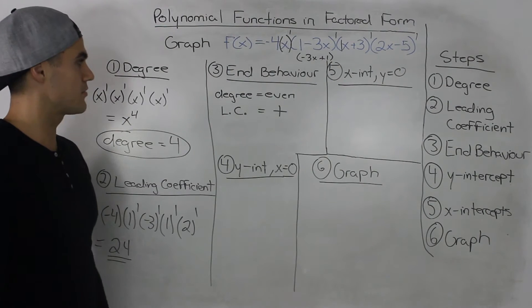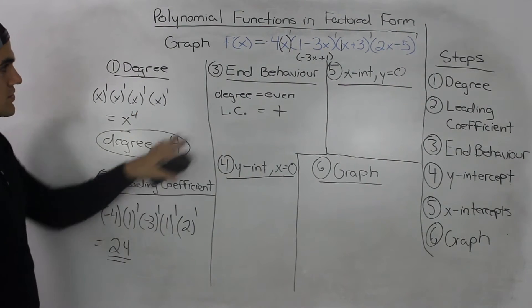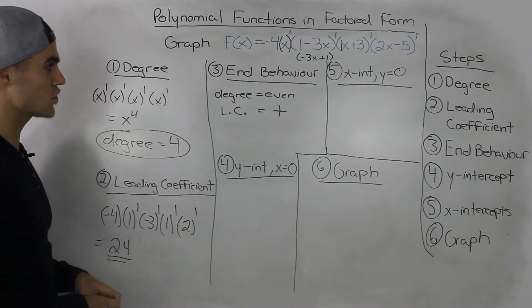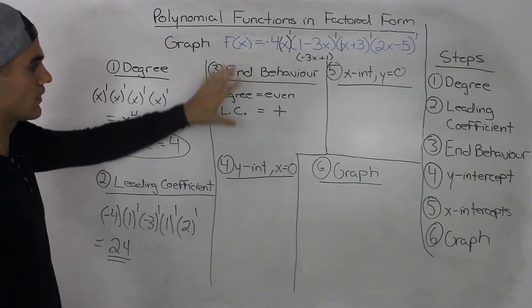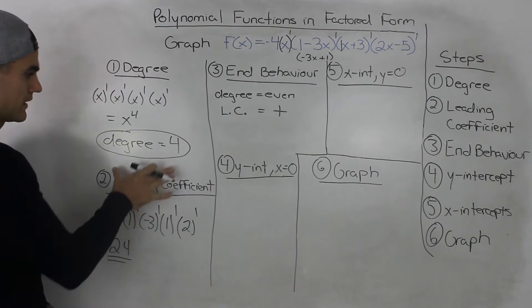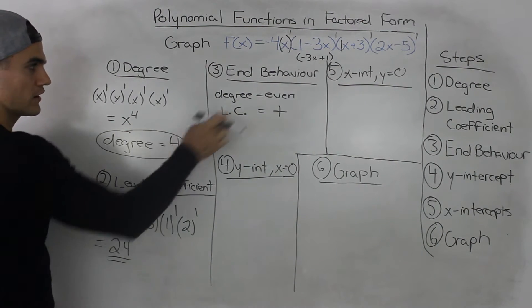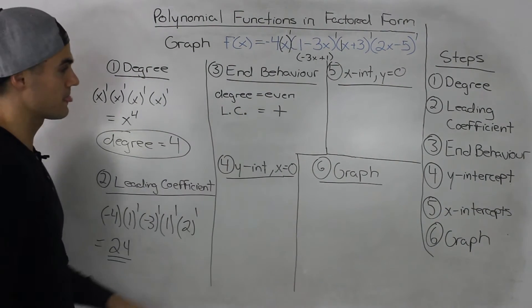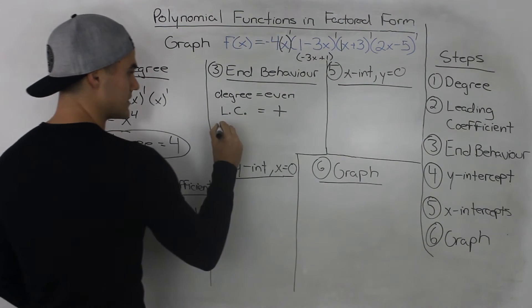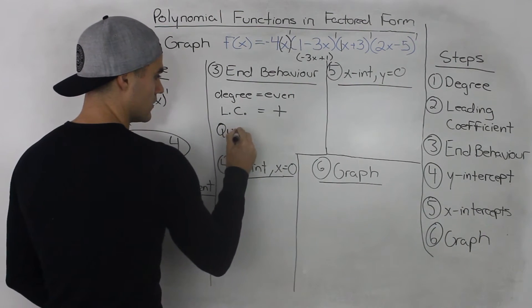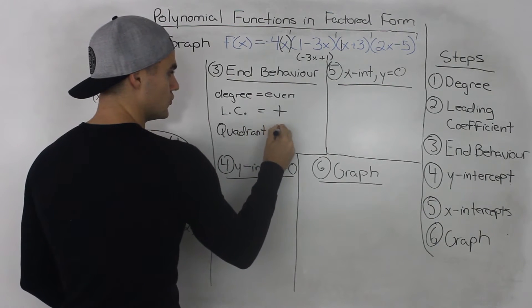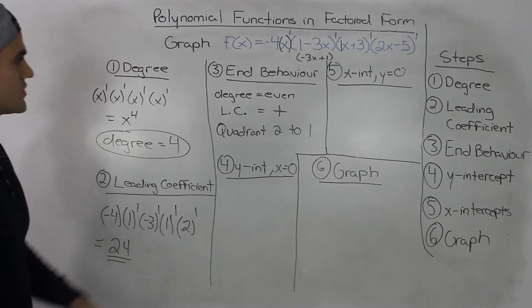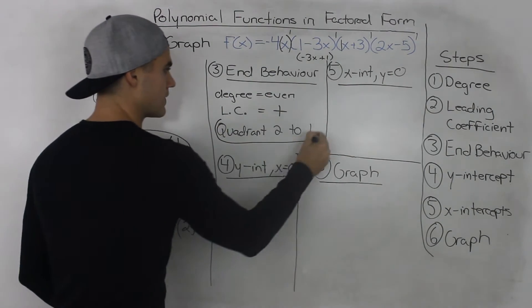Step 3: End behavior, which depends on steps 1 and 2. Referring back to the end behavior chart, it depends on the degree and the leading coefficient. Since our degree is 4 — which is even — and our leading coefficient is 24 — which is positive — an even degree with a positive leading coefficient means the end behavior goes from quadrant 2 to quadrant 1.